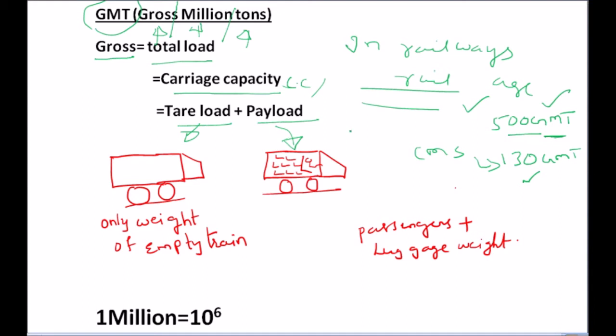So total load or gross load — carriage capacity — is equal to the empty weight of the train plus passengers and their luggage. I hope the gross term is clear. Now let us understand the next terms: million and ton.